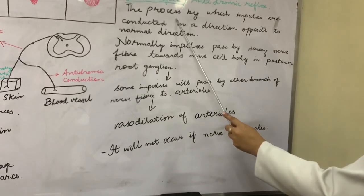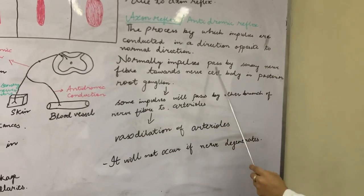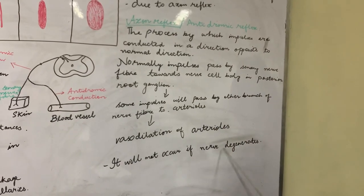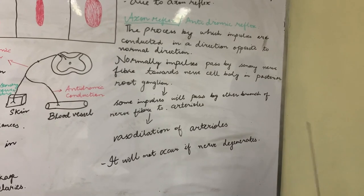As the axon reflex is a nervous reflex, it will not occur if the nerve degenerates.